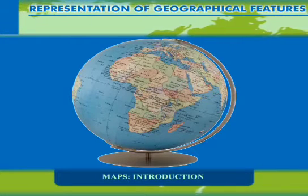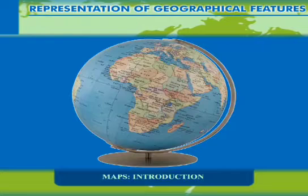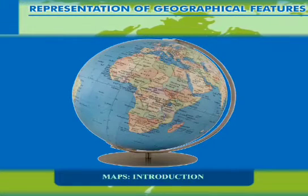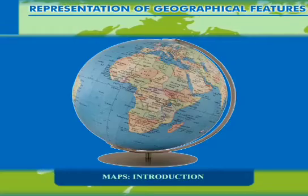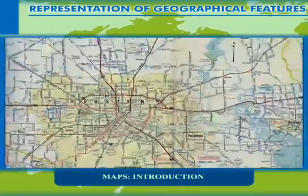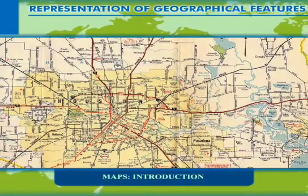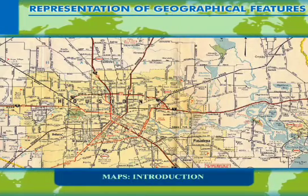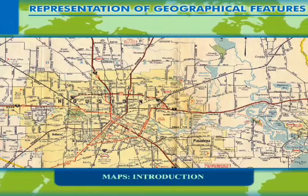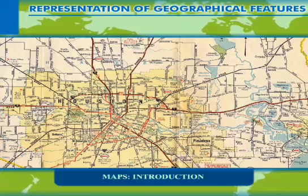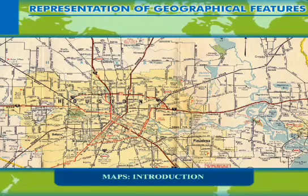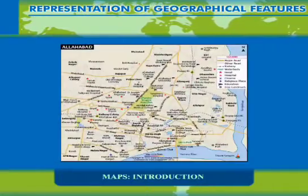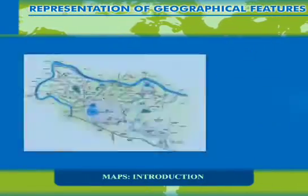However, as the globes always show the entire earth, these cannot be used to depict any small area. Maps become useful for this purpose. They can show the entire earth or any part of it. Unlike globes, they can show small areas with detailed information about them — for example, a city map or a locality map.